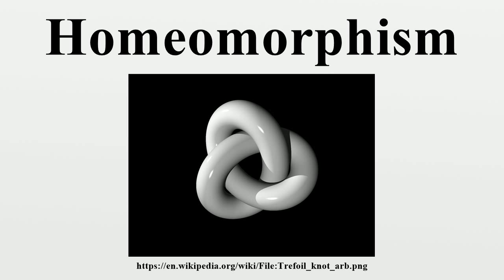Two spaces with a homeomorphism between them are called homeomorphic, and from a topological viewpoint they are the same. The word homeomorphism comes from the Greek words meaning 'similar' and 'shape' or 'form'.